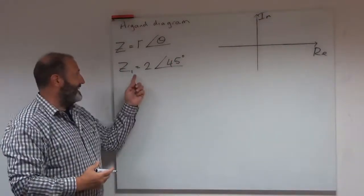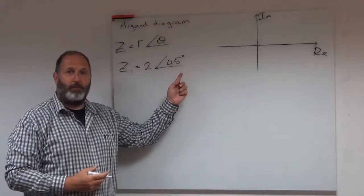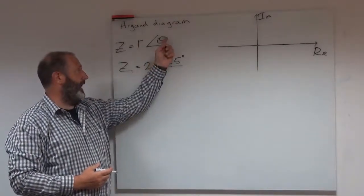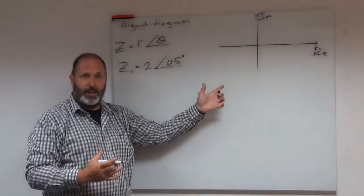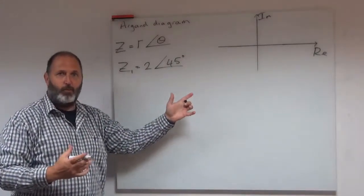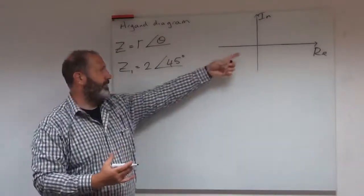So I'm going to say z1 is 2∠45 degrees. So r is 2 and the angle theta is 45 degrees. If I want to sketch that on my Argand diagram, how can I represent this over here?